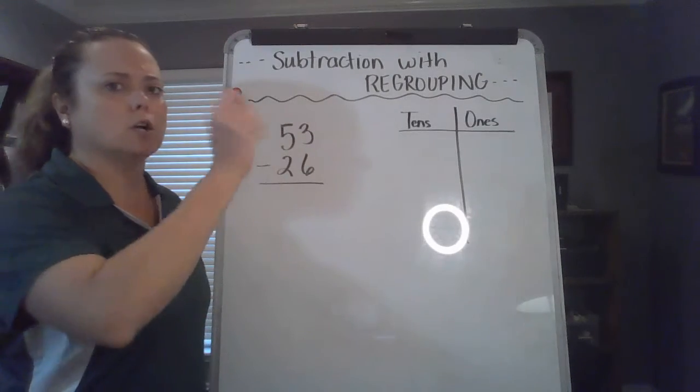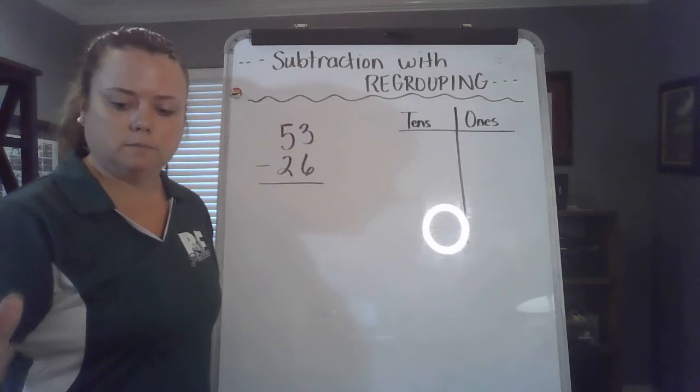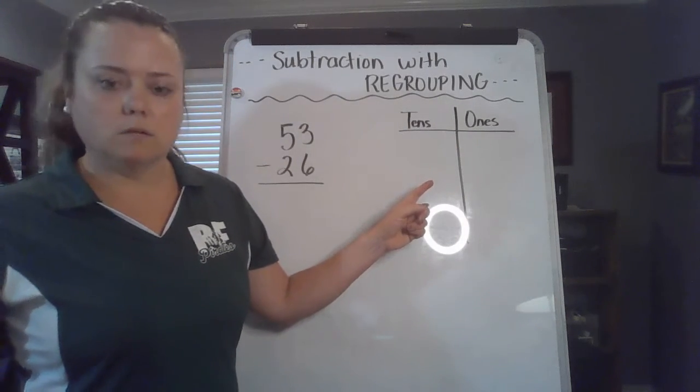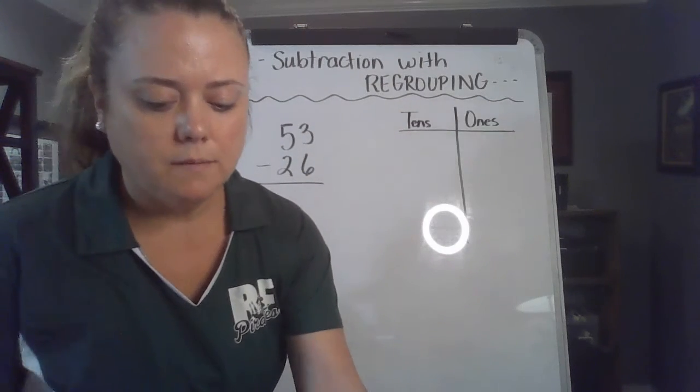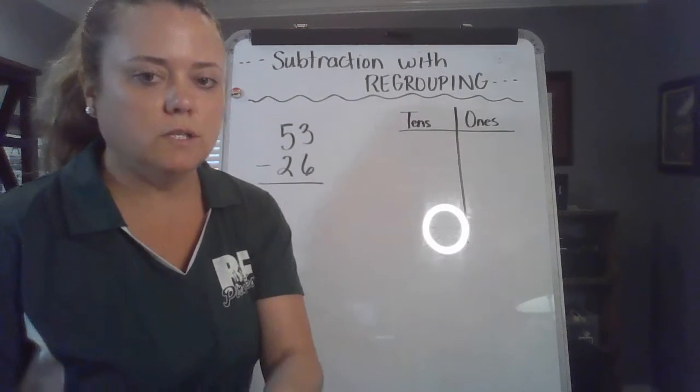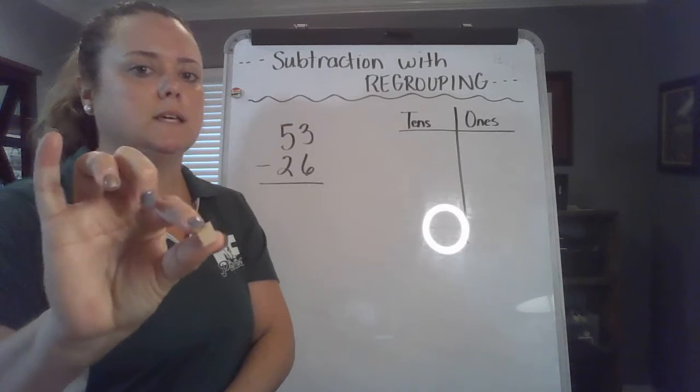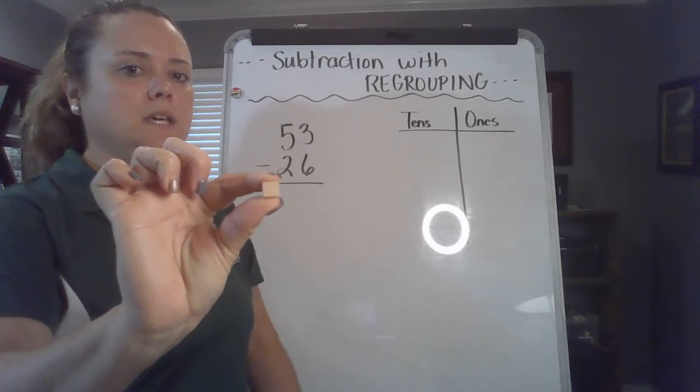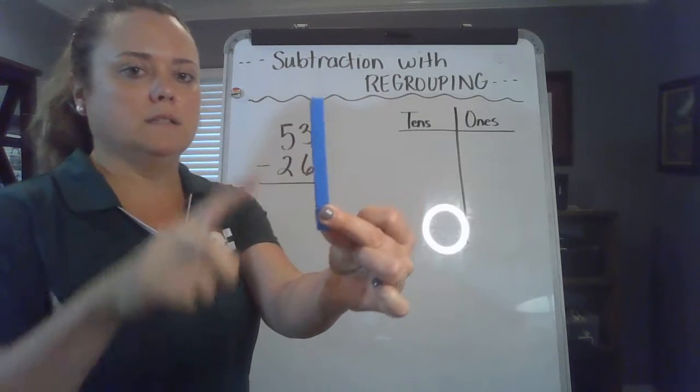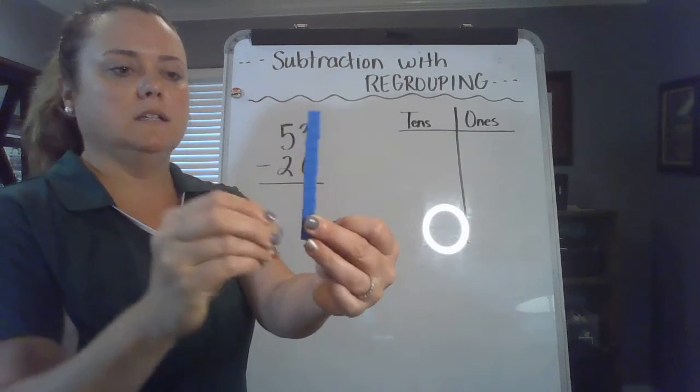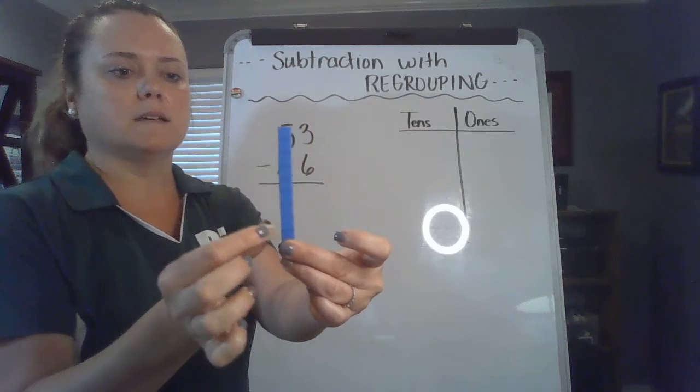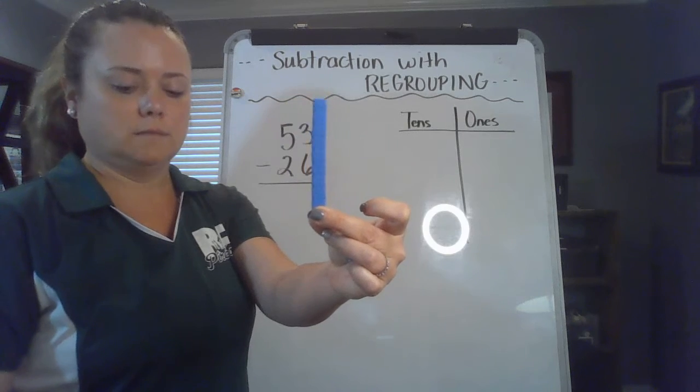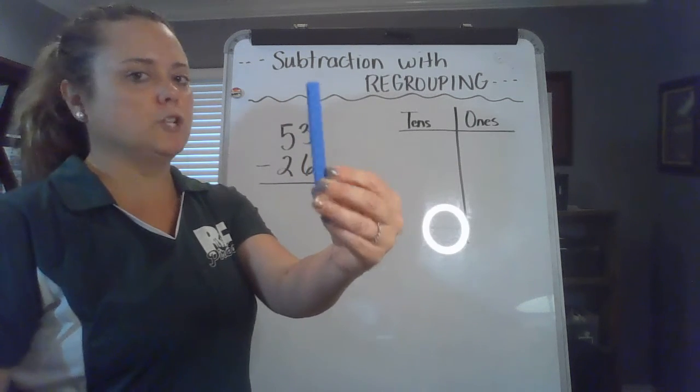Sometimes we start crossing off numbers without even knowing what we're doing. So I have these base 10 blocks right here. My students will remember that this is a unit, or a ones block, and it takes 10 of these to make one of these. This is a tens rod, and if you stack 10, which we do in class, you'll get 10 of these. Today we're just going to talk about ones and tens.